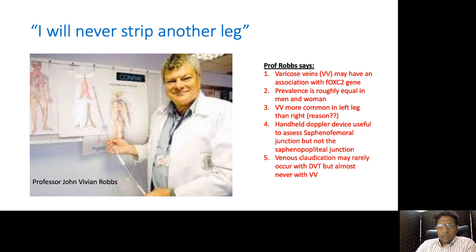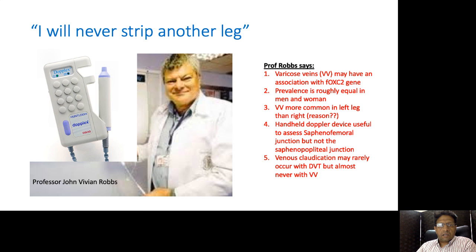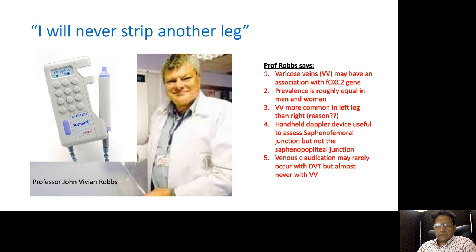This is a handheld Doppler device — it fits in your hand, it's battery operated, and the little blue tip is a sensitive Doppler probe. You apply ultrasound gel or even KY jelly to get a good acoustic contact medium and place it over a vein. For example, if you place it over the sapheno-femoral junction, you could squeeze the calf or thigh and listen for reflux or forward flow. Venous claudication is a rare symptom; it may rarely occur with DVT but almost never occurs with varicose veins.